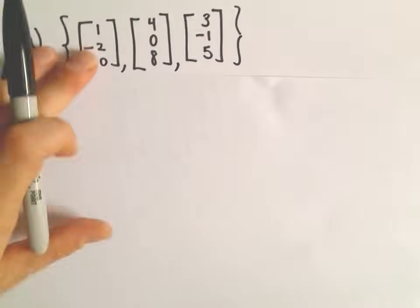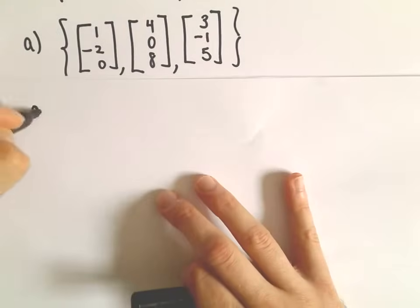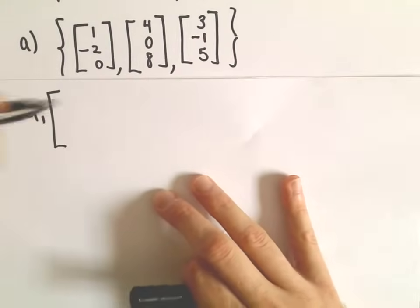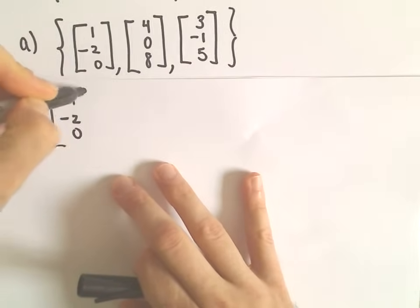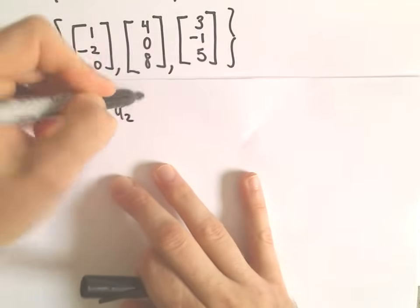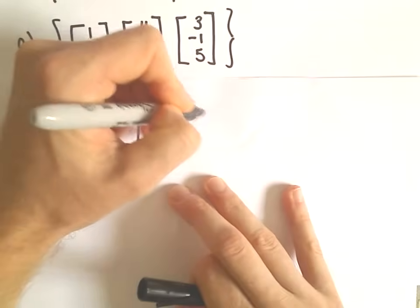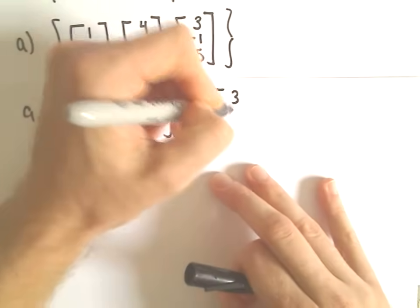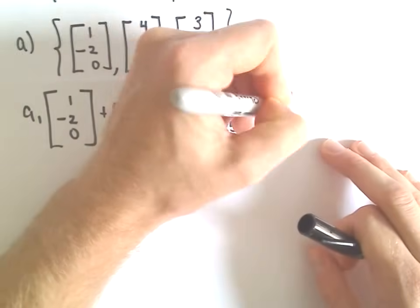So again, what we're doing is we're just looking for solutions to the system of equations, or the equation a sub 1 times 1, negative 2, 0, plus a sub 2 times 4, 0, 8, a sub 3 times 3, negative 1, 5. And again, we're going to set that equal to the 0 vector.